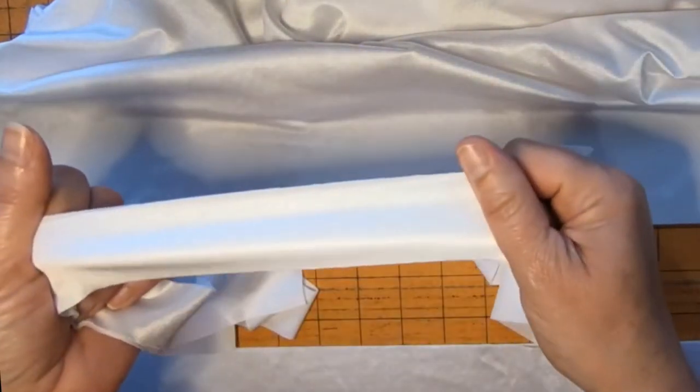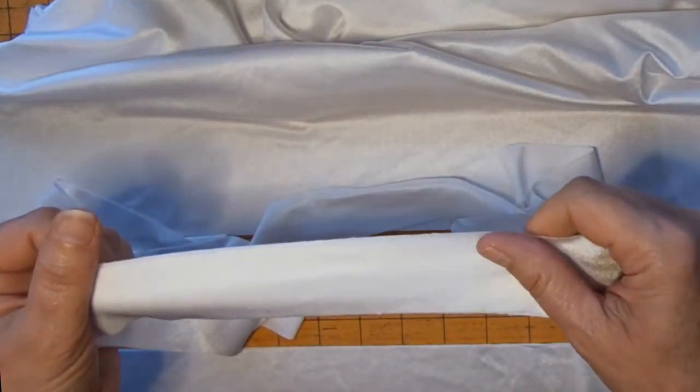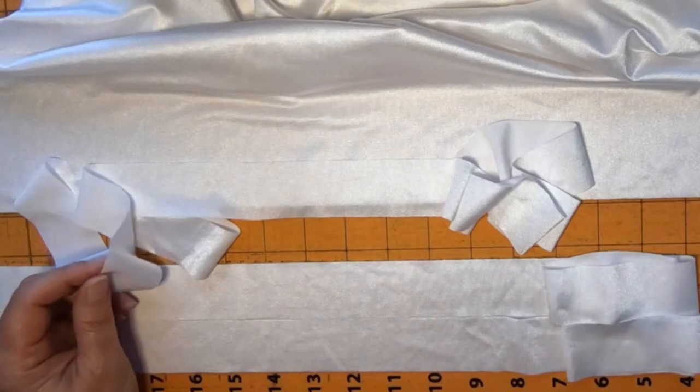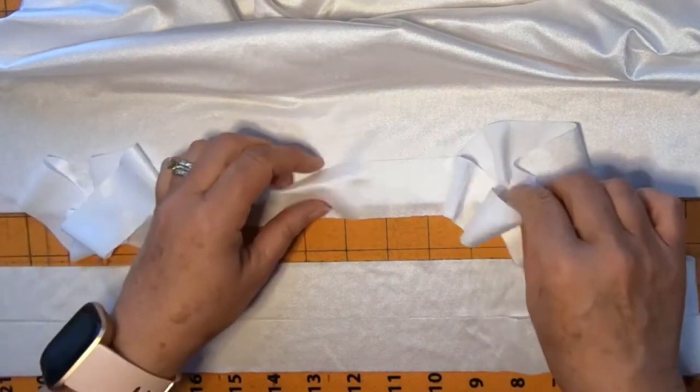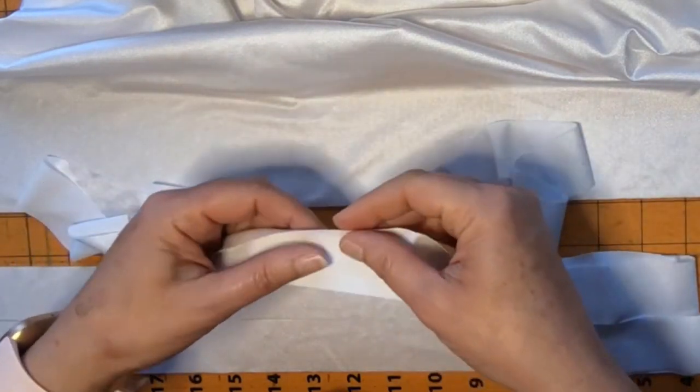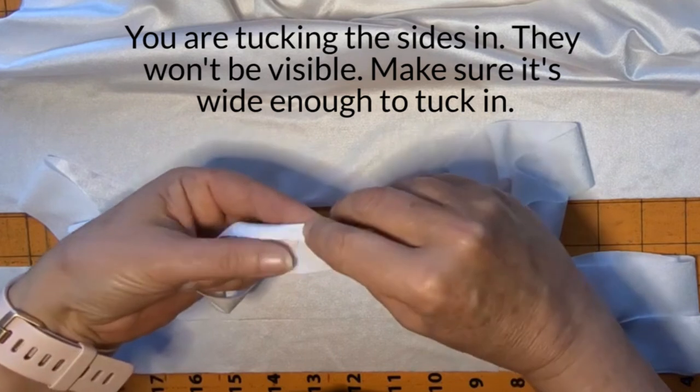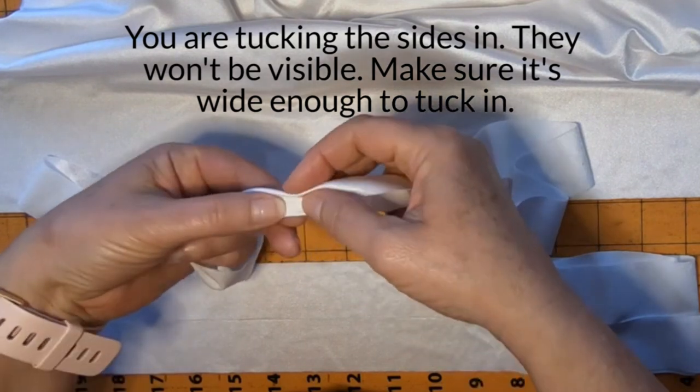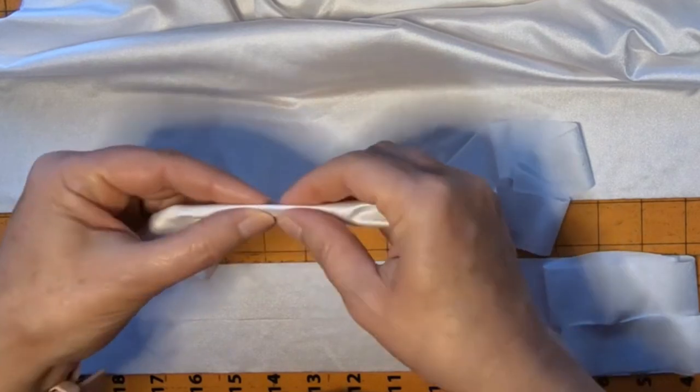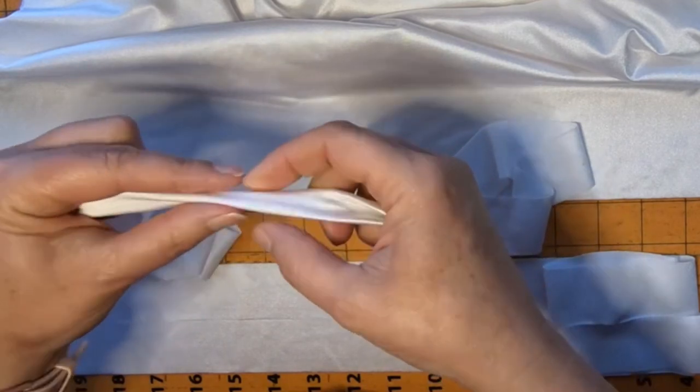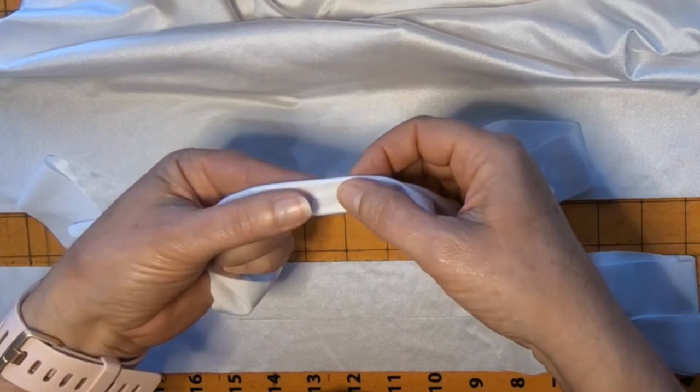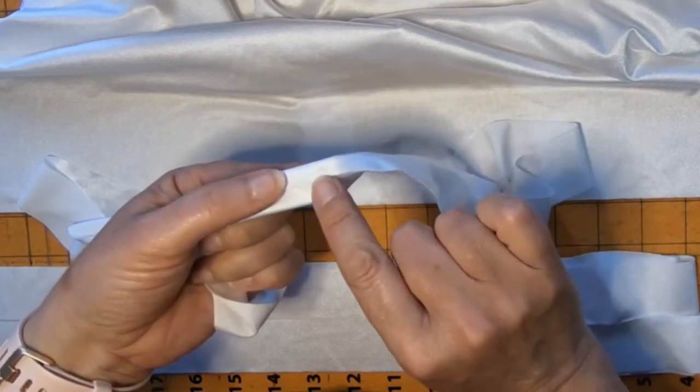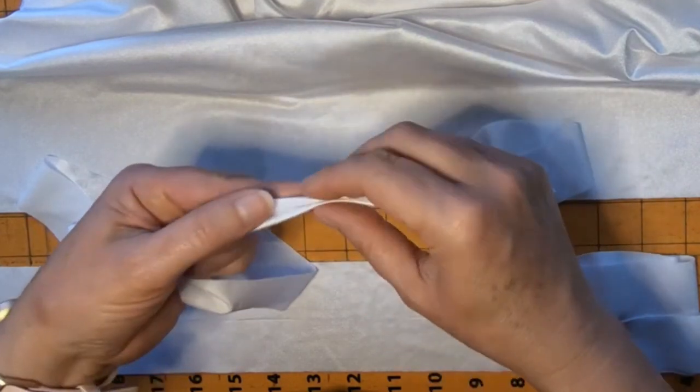You can make your binding pieces as big as you want. Someone asked about making it super narrow, but keep in mind you're going to fold it in and hide the fabric. Even if you want it narrow, you need enough fabric to fold inside to seal the stitch.